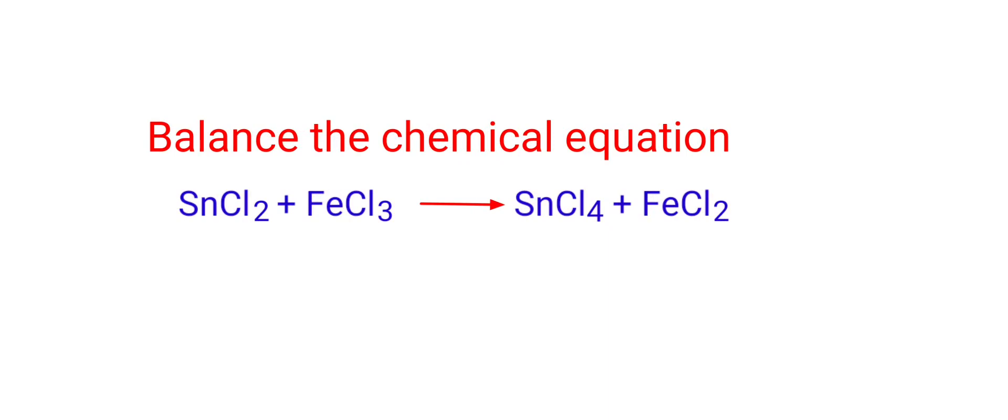Balance the chemical equation. Tin 2 Chloride plus Iron 3 Chloride yields Tin 4 Chloride plus Iron 2 Chloride.